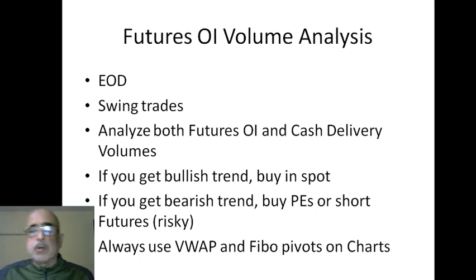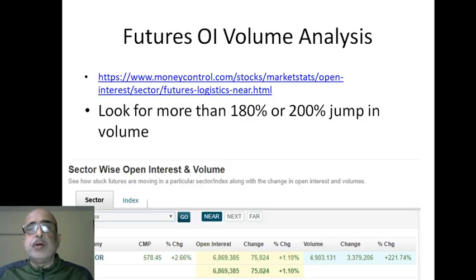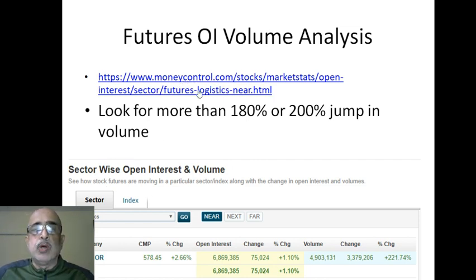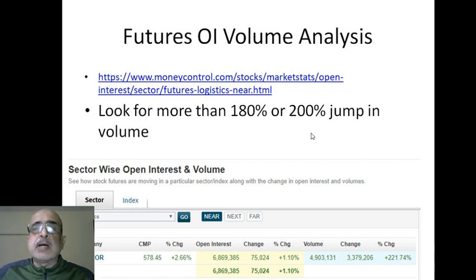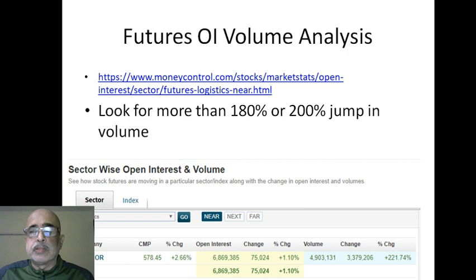I'm going to show you how to do the volume analysis and the charts. The first thing is you have to go to this Money Control link, because that reports the volume — don't go to the NSE because there's no volumes there. I'll paste this link in the comments section. Look for stocks where the volume has jumped more than 180 to 200 percent. In a bullish trending market you can look at 120–130%, but this is a choppy market so 180 to 200 percent.